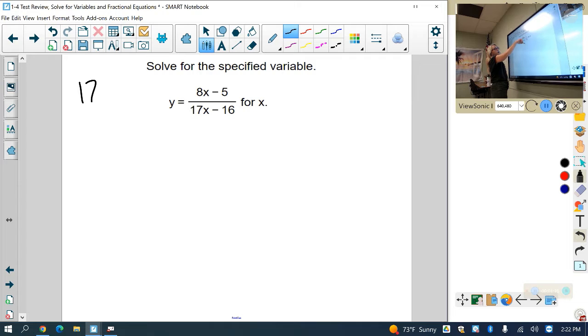I have an x in the denominator and the numerator, so I want to get this x out of the denominator, so I'm going to multiply both sides by 17x minus 16. So I have 17x minus 16 on this side times y equals, and then when I multiply this side by 17 minus x,